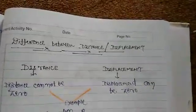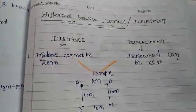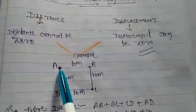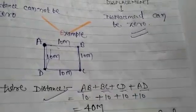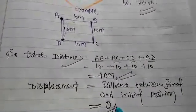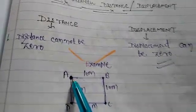What is the difference between distance and displacement? Distance is the actual length of the path. Displacement is the shortest distance between initial and final position. First difference: distance cannot be zero but displacement can be zero. For example, suppose an object travels in a square path: A to B, B to C, C to D, D to A, each side 10 m, so total distance is 40 meters. But initially and finally the object is at A, so there is no displacement — displacement is zero.